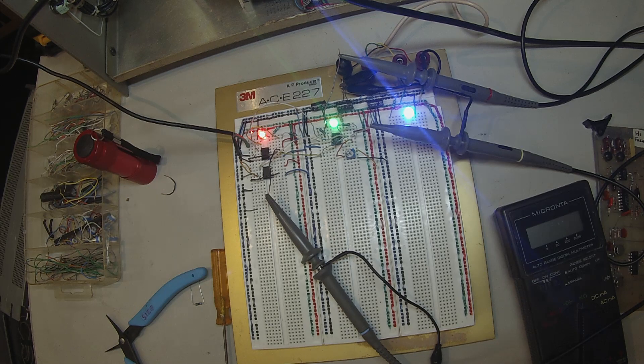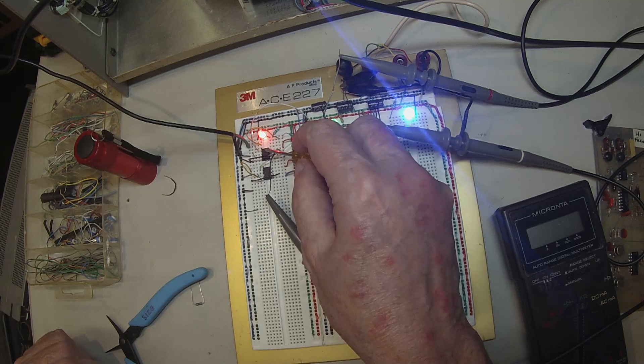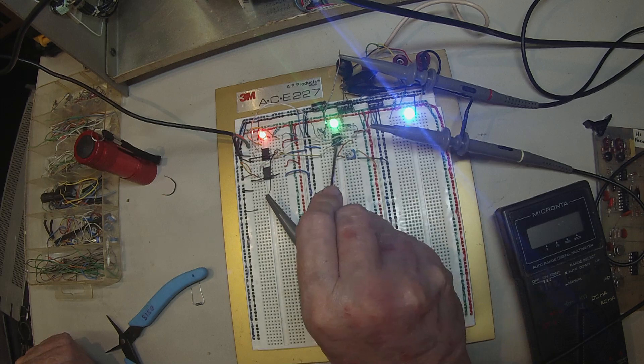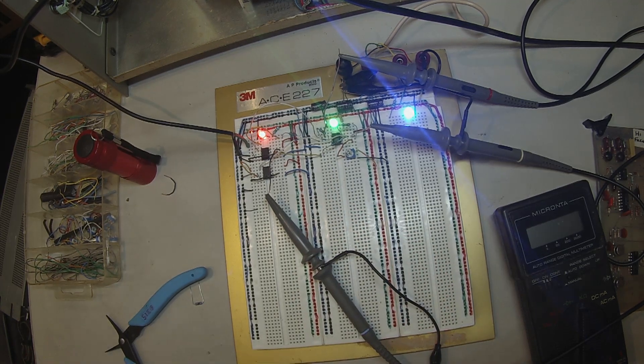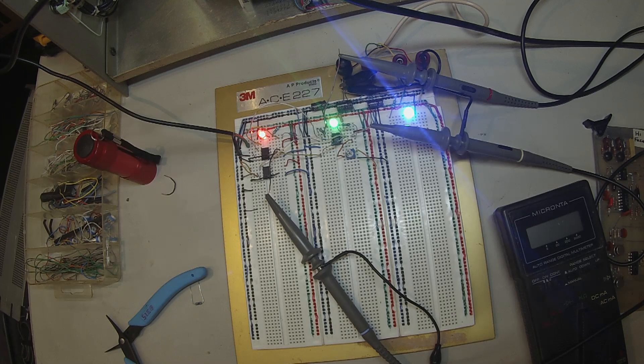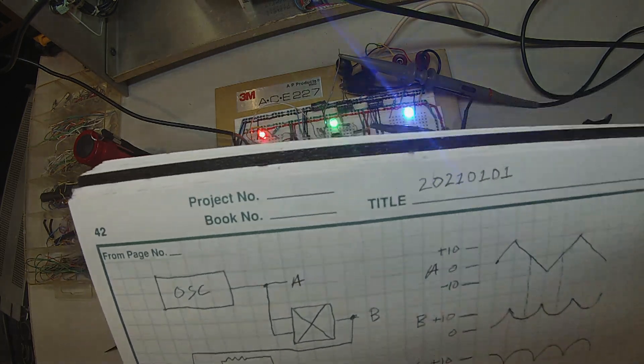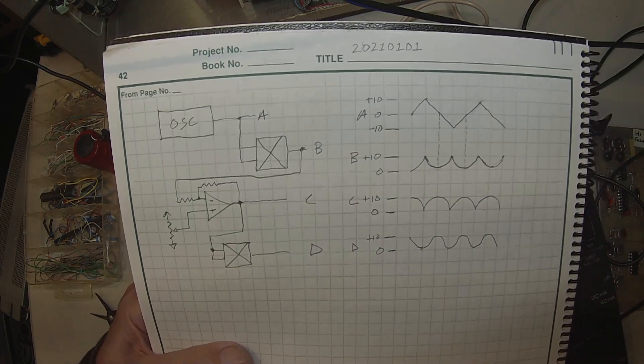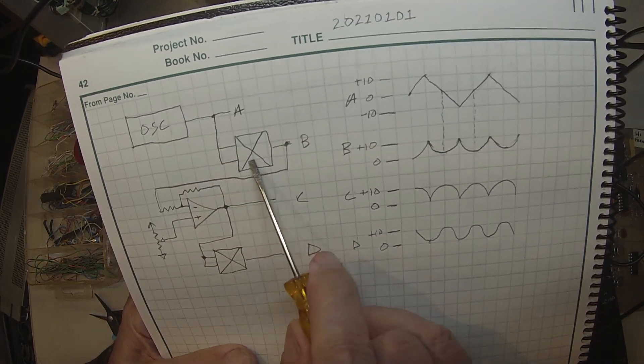On the breadboard here I've got two four-quadrant multipliers and this is just a dual op-amp. Basically what I'm doing is I've got an oscillator and I'm feeding both inputs of a multiplier.